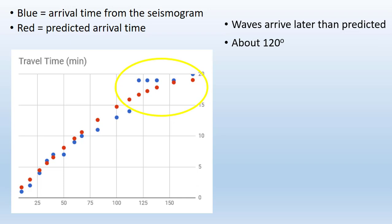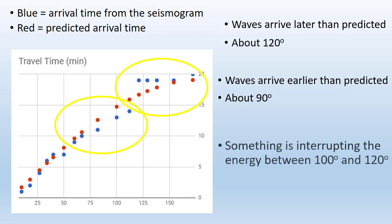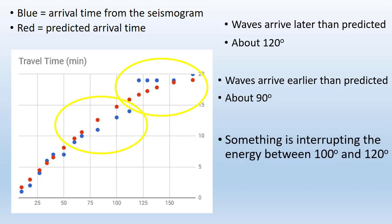However, some waves are arriving later than predicted, and if we look on our graph, that occurs at around 120 degrees of a geocentric angle. There are also some waves that are arriving earlier than predicted, at about the 90 degree geocentric angle. So that must mean that something is interrupting the wave energy between 100 degrees and 120 degrees.